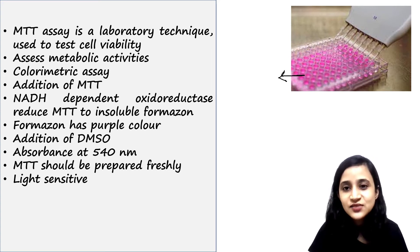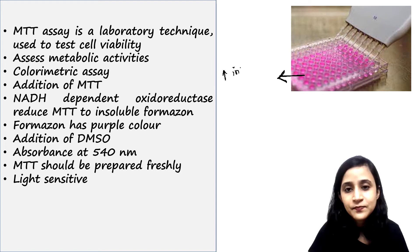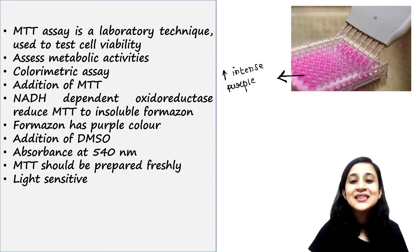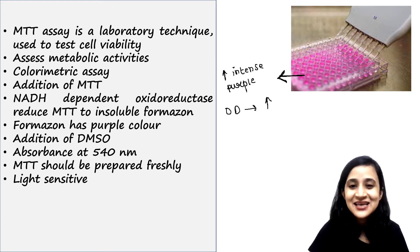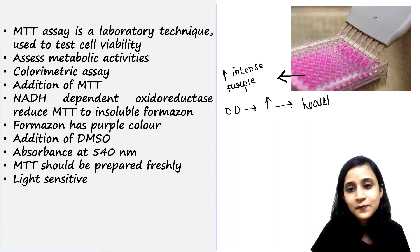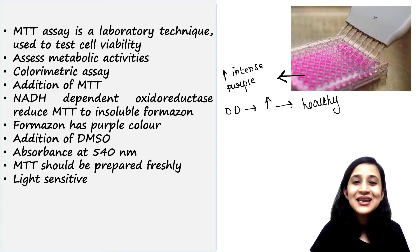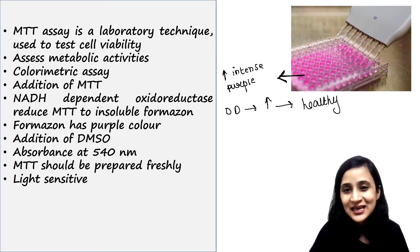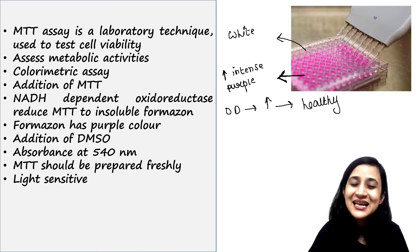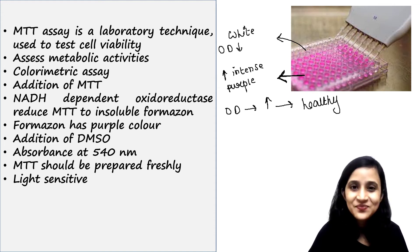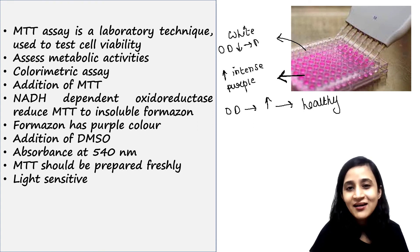If we get a more intense purple color — as seen here in the 96-well plate where cell cultures are present — the OD will be higher, meaning cells are more healthy. If less intense purple color is seen, as in these wells which appear white or very faint purple, the OD will be less, meaning these cells are dying.